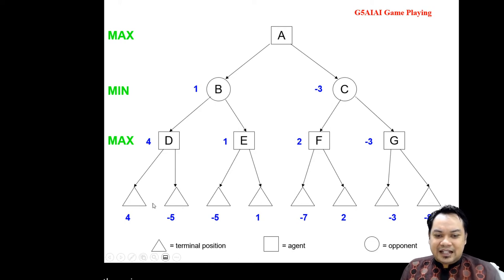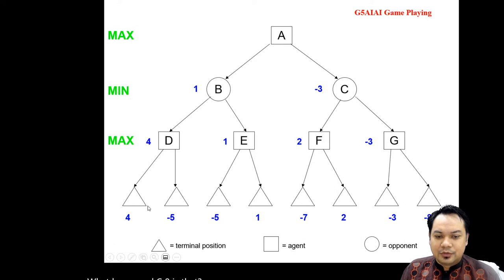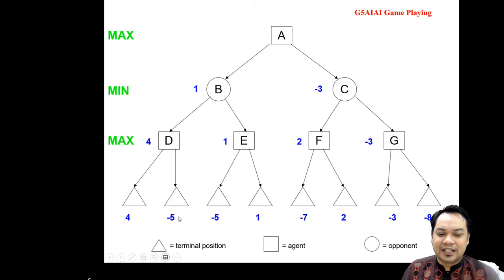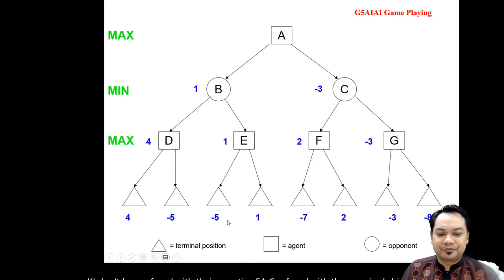At the max level, you select the highest number. For 4 and negative 5, which one is highest? In max, you select 4 because 4 is the highest. Don't be confused — some students think negative 5 is a higher value, but actually negative 5 is lower than 4. So max of 4 and negative 5 gives you 4.